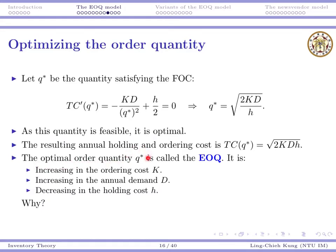The optimal order quantity q* is called the EOQ, or Economic Order Quantity. q* is increasing in the ordering cost K and annual demand D, but decreasing in the holding cost h. When you have a larger ordering cost, you want to prevent paying those costs, so you make fewer orders, which requires increasing your order quantity in each order. When you have a larger holding cost, you want to reduce your order quantity.